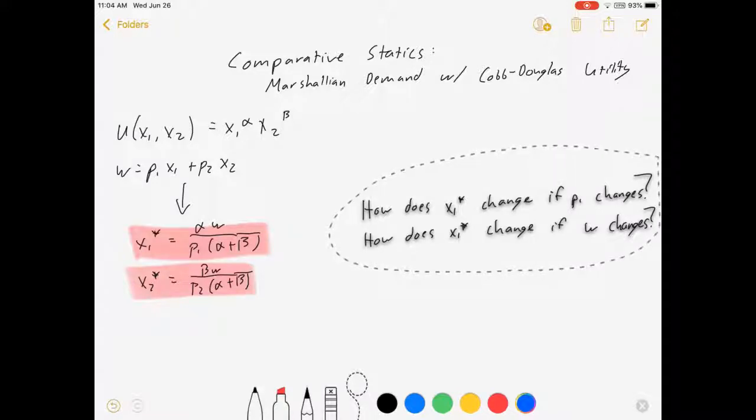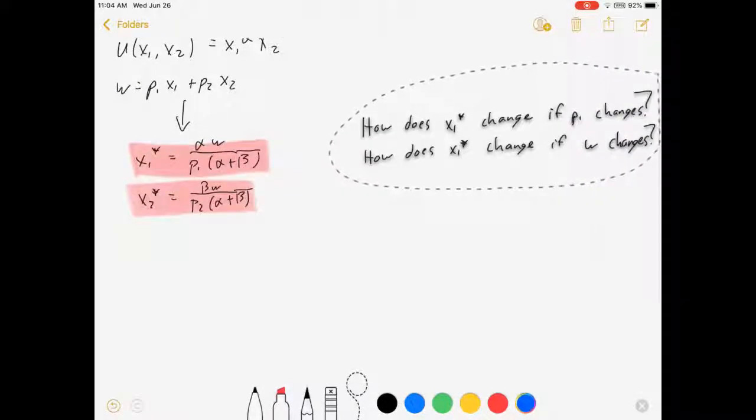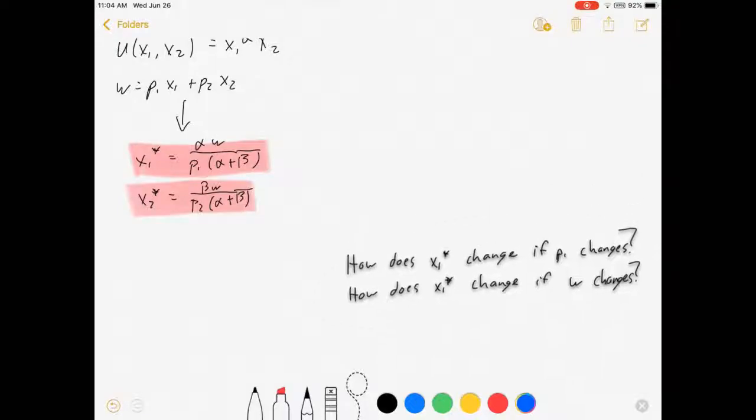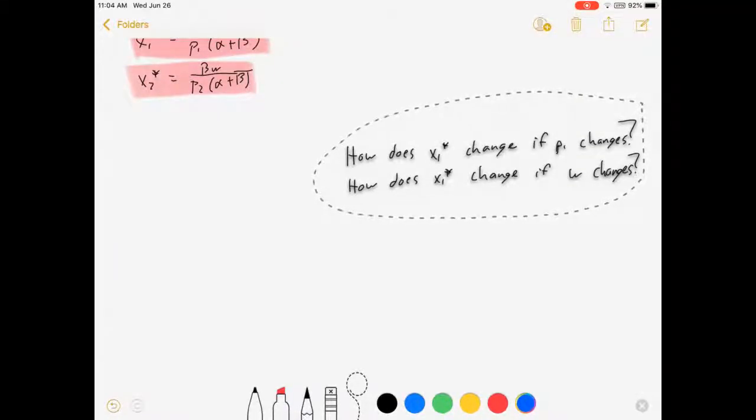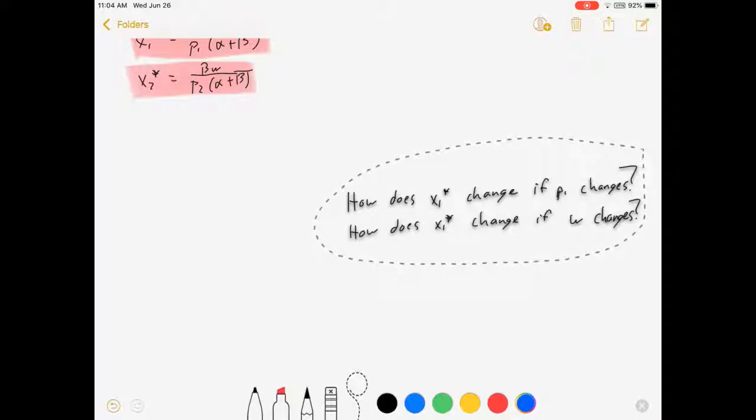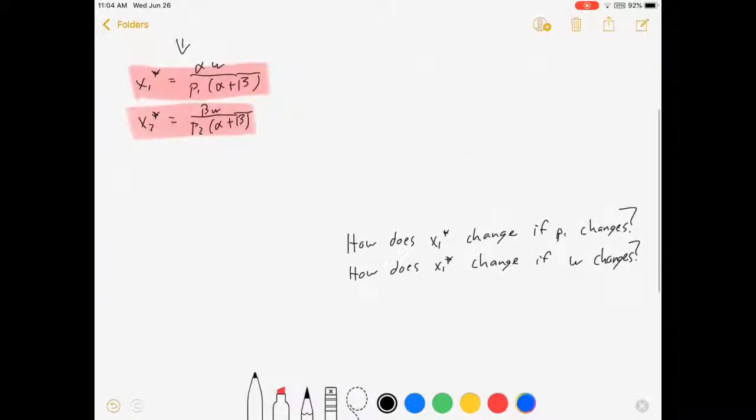Now you remember from intro class price and quantity go in opposite directions, I'd expect the first answer there to be negative, but how fast does x fall if price rises is the kind of question that we can be very interested in. So I'm going to answer both of these questions using some calculus, some comparative statics.